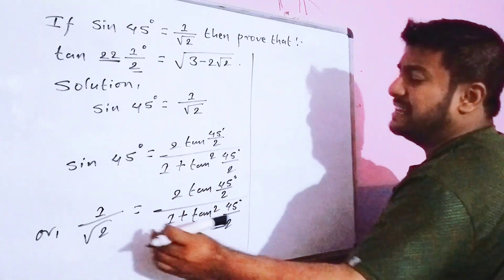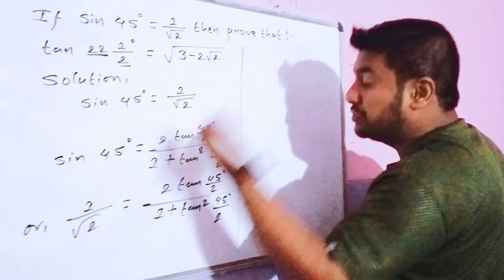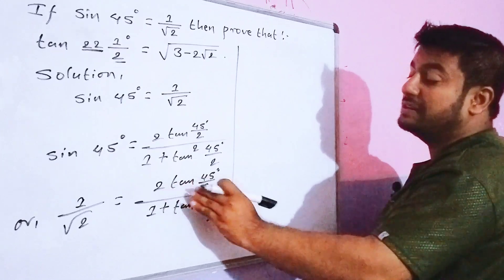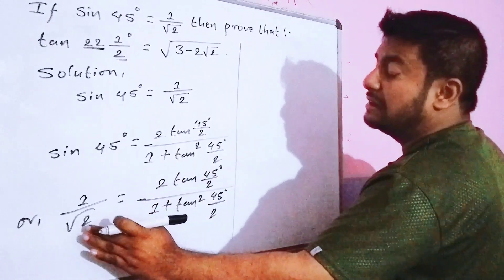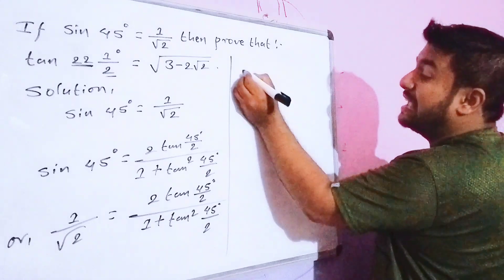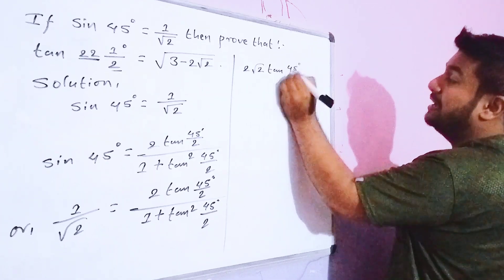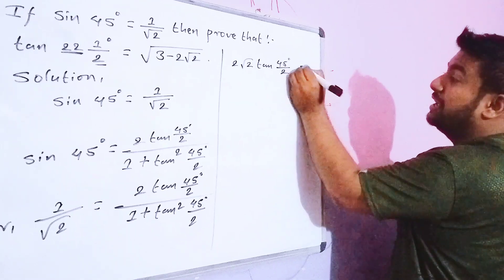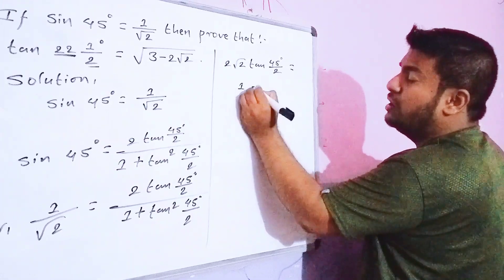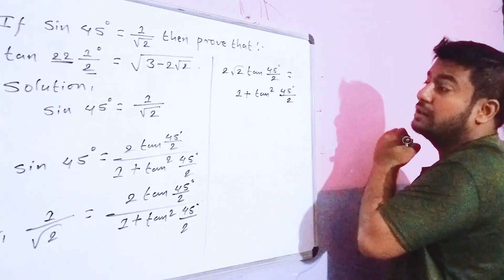Now we do cross multiplication. The denominator on the left has root 2, and the numerator on the right has 2 tan(45/2). Cross multiplying gives: root under 2 into 2 tan(45/2) equals 1 plus tan square(45/2). That is, 2 root under 2 tan(45/2) equals 1 plus tan square(45/2).